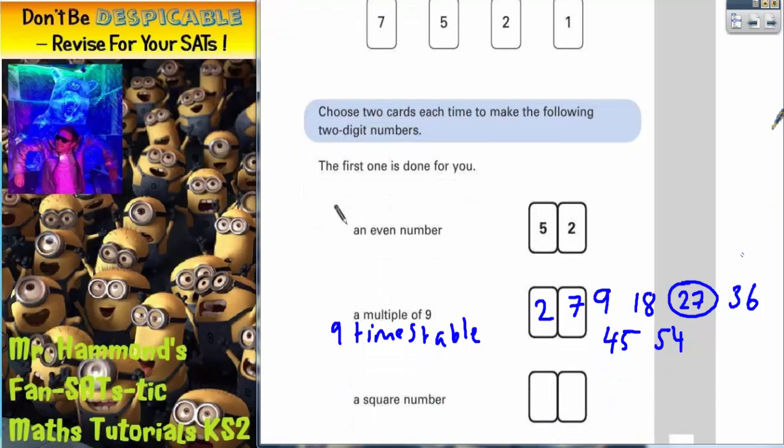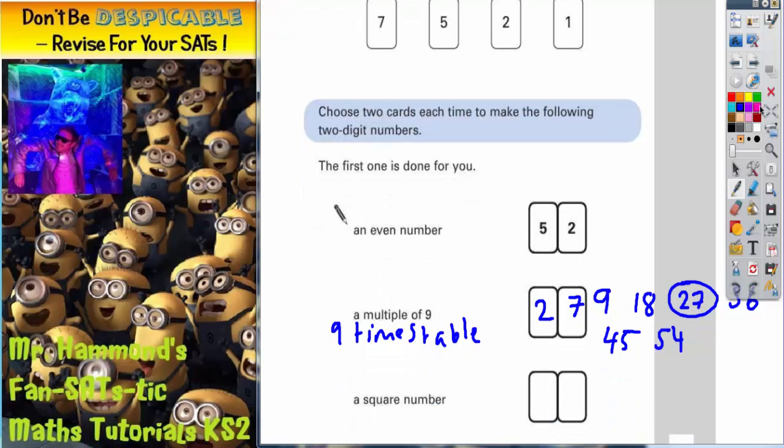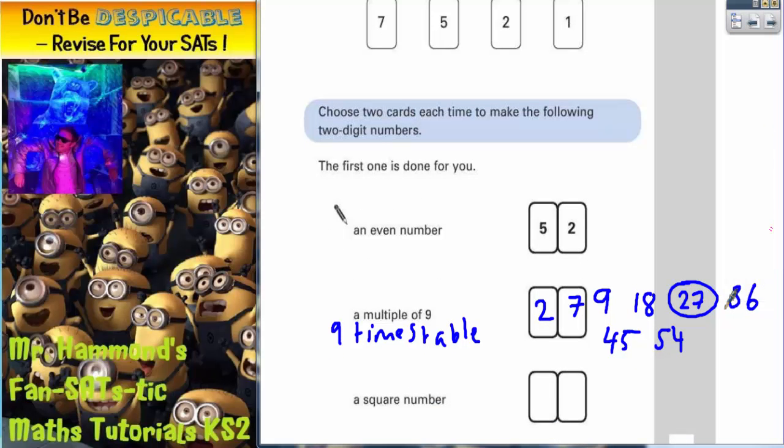The second question talks about finding a square number. Well again let's think about what the square numbers are and write the first few down. With square numbers this is where you take a number and you multiply it by itself. So to generate the square numbers you just do this.